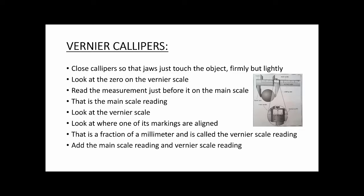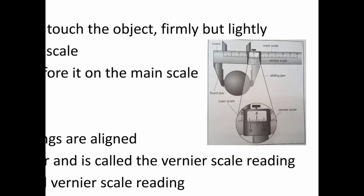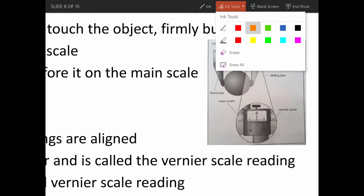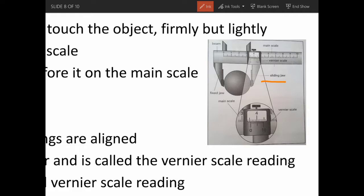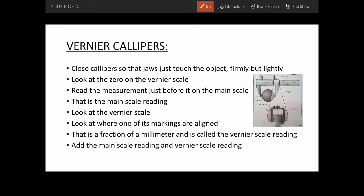Vernier calipers are used like this. First, you close the calipers so that the jaws touch on the object firmly but lightly — just enough to hold it in place. There are two scales: a main scale, which is the bigger one, and a vernier scale, which is the smaller one.